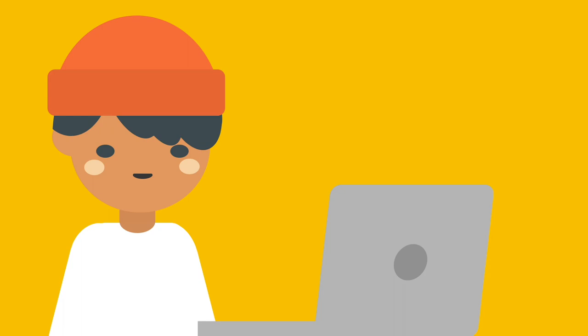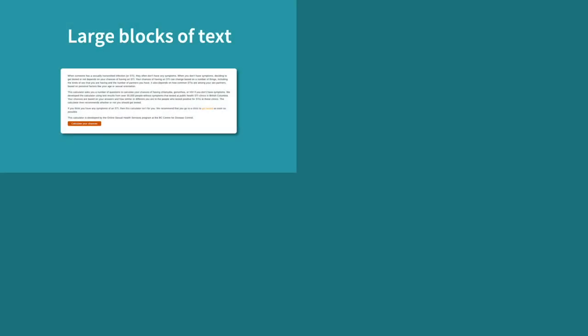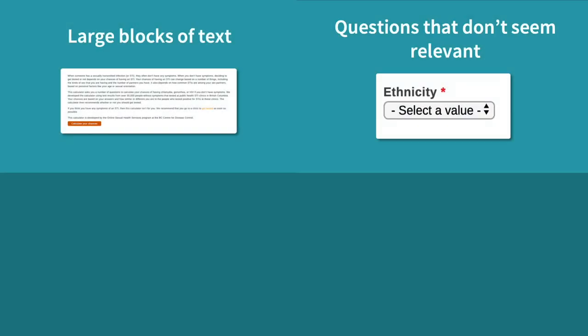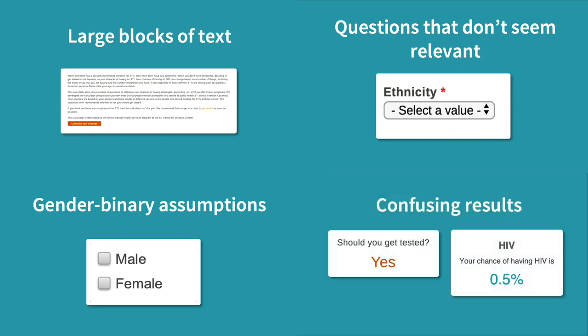The initial prototype of the risk calculator was tested with target users. While most users recognized the benefits of the calculator in encouraging testing, they also identified several critical issues. The introductory page overwhelmed users with large blocks of text, some questions didn't seem relevant to STI risk, the survey lacked options for non-binary genders, and users were confused when they received a positive testing recommendation despite a low risk score.